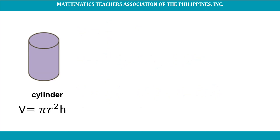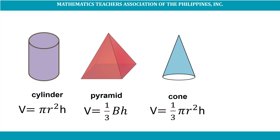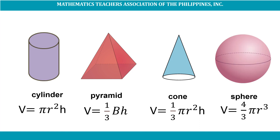Always remember the formula in finding the volume of the following solids. Cylinder: V = πr²h. Pyramid: V = (1/3) × area of the base × height. Cone: V = (1/3)πr²h. And V = (4/3)πr³.